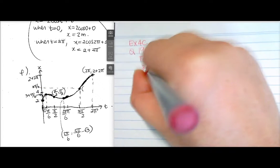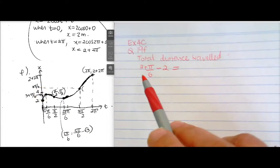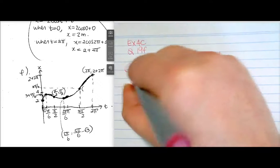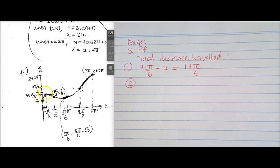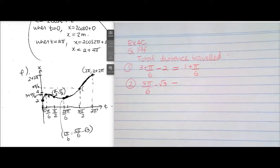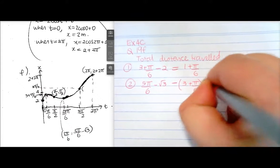The total distance travelled has three sections. The first section: from 2 up to 3 + π/6, so it's (3 + π/6) − 2 = 1 + π/6. The second section: travelling from 3 + π/6 down to 5π/6 − √3, so it's (5π/6 − √3) − (3 + π/6). That's final minus initial.